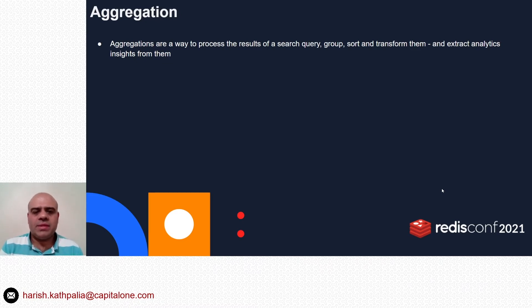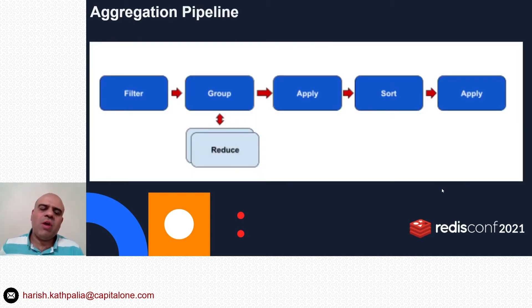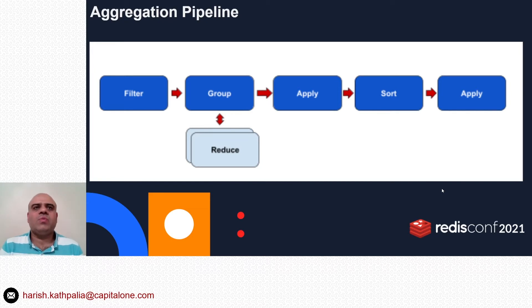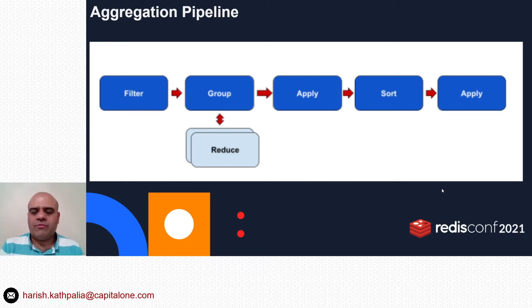Now let's talk about aggregations. Business and data analysts generate many reports. In traditional databases, reports are created using commands like SUM, COUNT, or AVERAGE. Aggregations are a way to process search query results — grouping, sorting, and transforming them to extract analytical insights. The basic idea of an aggregate query is to perform the query, extract the records you wish to process, then build a pipeline of operations containing one or more steps of grouping and reducing. You group fields, apply a reducer function on each group, sort results, apply mathematical or transformation functions, limit the result set, and filter on predicates.